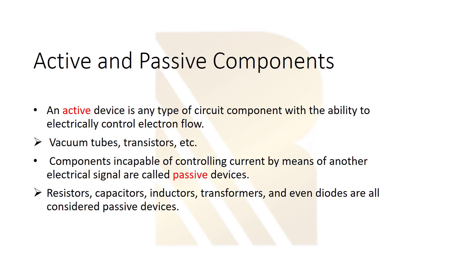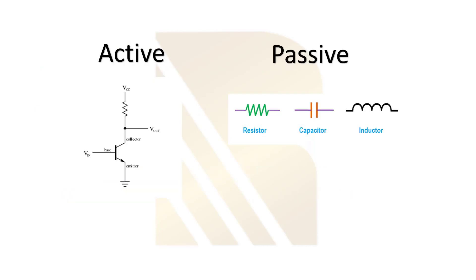What about passive elements? Components incapable of controlling current by means of another electrical signal are called passive devices. Examples include resistors, capacitors, inductors, and other passive components like transformers and diodes — they cannot control the current.